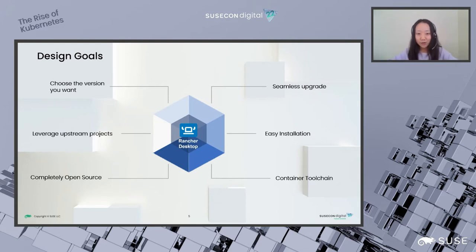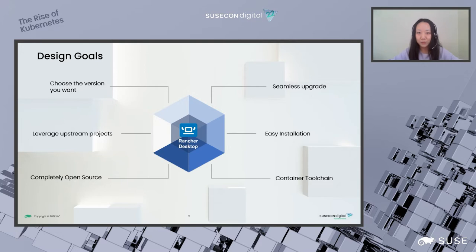And then easy installation — you can just download installers and set it up on Windows, Mac, and Linux. Container toolchain: you can build, push, and pull container images, and test an application in containers and in Kubernetes without pushing your images to a registry first. We also leverage upstream projects. Again, it's completely open source, no hidden magic.